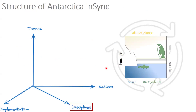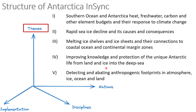The overall structure of Antarctica InSync is multidimensional — multiple nations being involved, multiple disciplines being involved, and multiple topics going across disciplines. In terms of disciplines, we envision including all of the atmosphere, snow, sea ice, ecosystem, ocean, seafloor, land ice — the system as a whole.